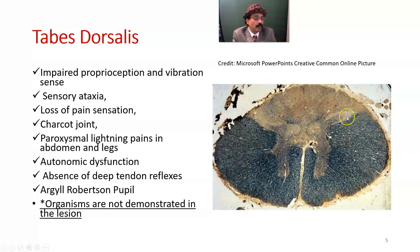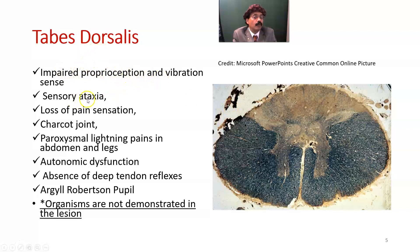This is the posterior column, which contains the fasciculus gracilis and fasciculus cuneatus — responsible for position sense, vibration sense, and proprioception. In tabes dorsalis, there is impaired proprioception and vibration sense, leading to sensory or locomotor ataxia — the person cannot walk normally and may fall to either side. There is also loss of pain sensation and Charcot joint — usually in the knee or the ankle joint — where there is lack of nerve supply to the joint, so the joint may be damaged, inflamed, and deformed.